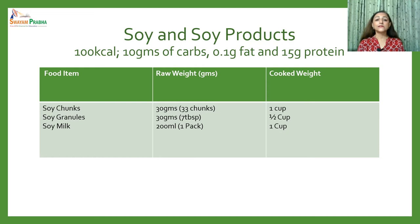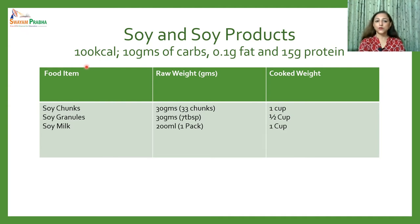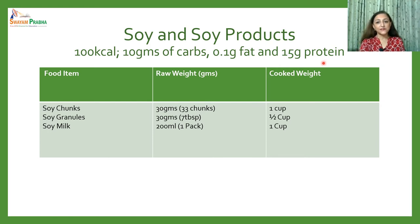Soy and soy products are categorized separately from pulses because of their different nutritional contribution. One serving provides 100 kilocalories, approximately 0.1 gram of fat, and 15 grams of protein, making it a high-protein group. It includes soy chunks, soy granules, and soy milk. One exchange of soy chunks is 33 chunks, and one cup of soy chunks in any cooked form gives this amount of nutrients.